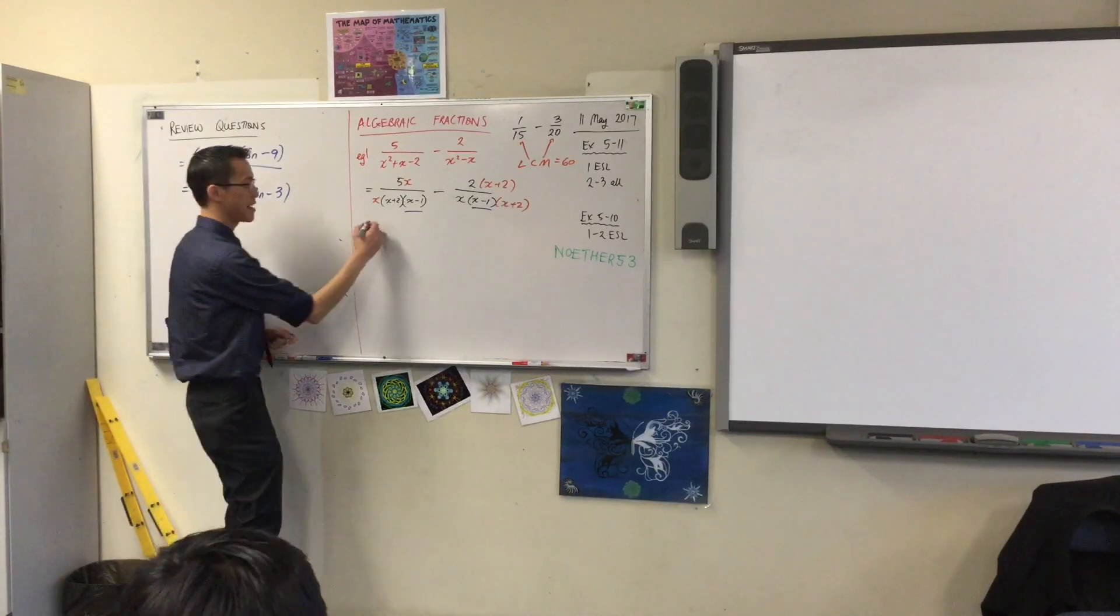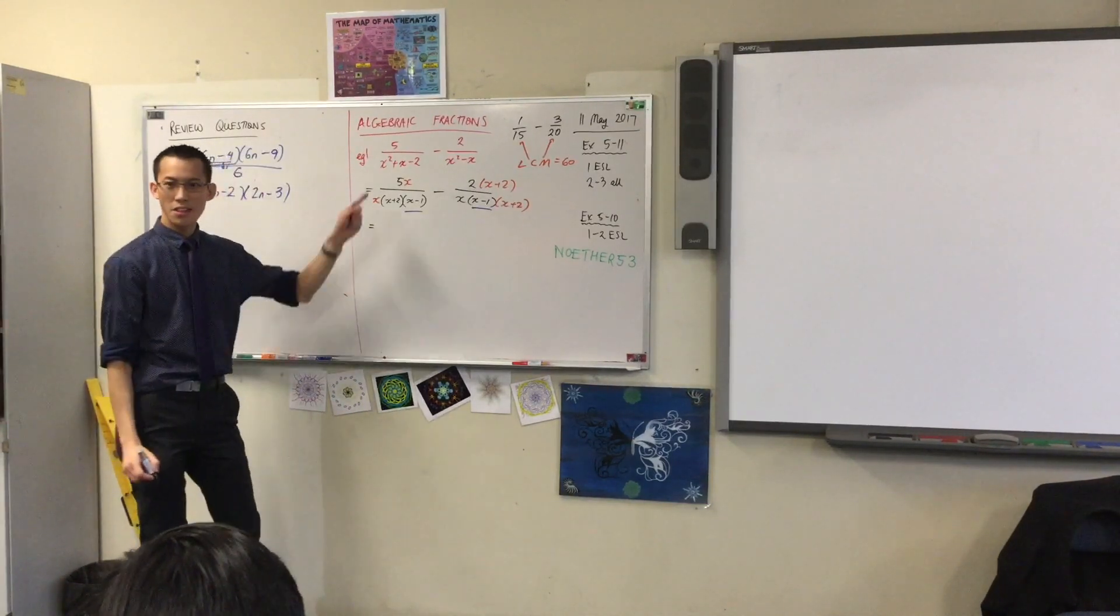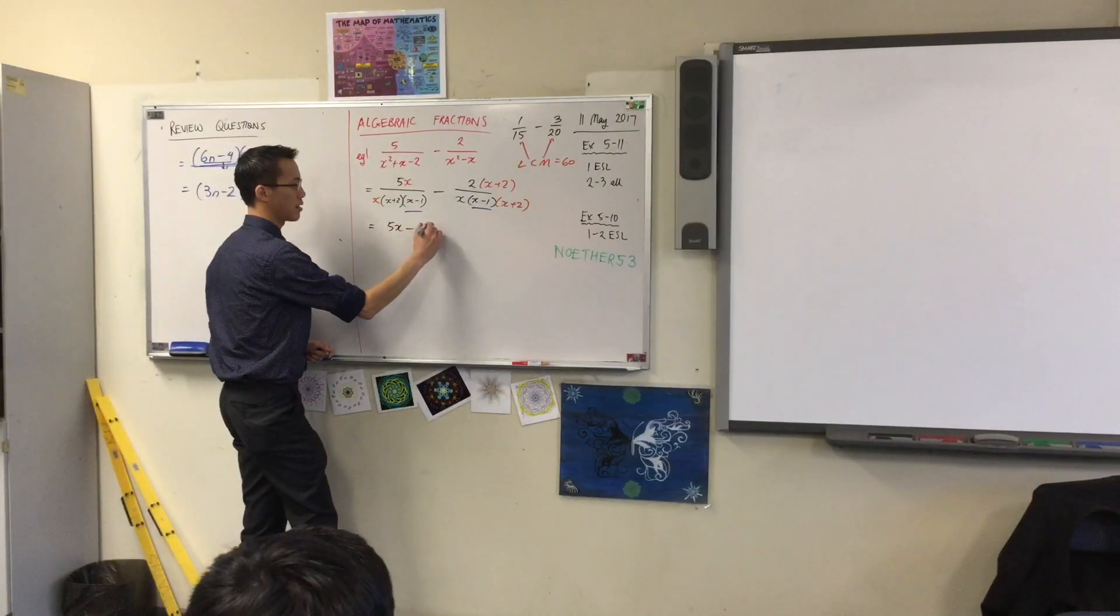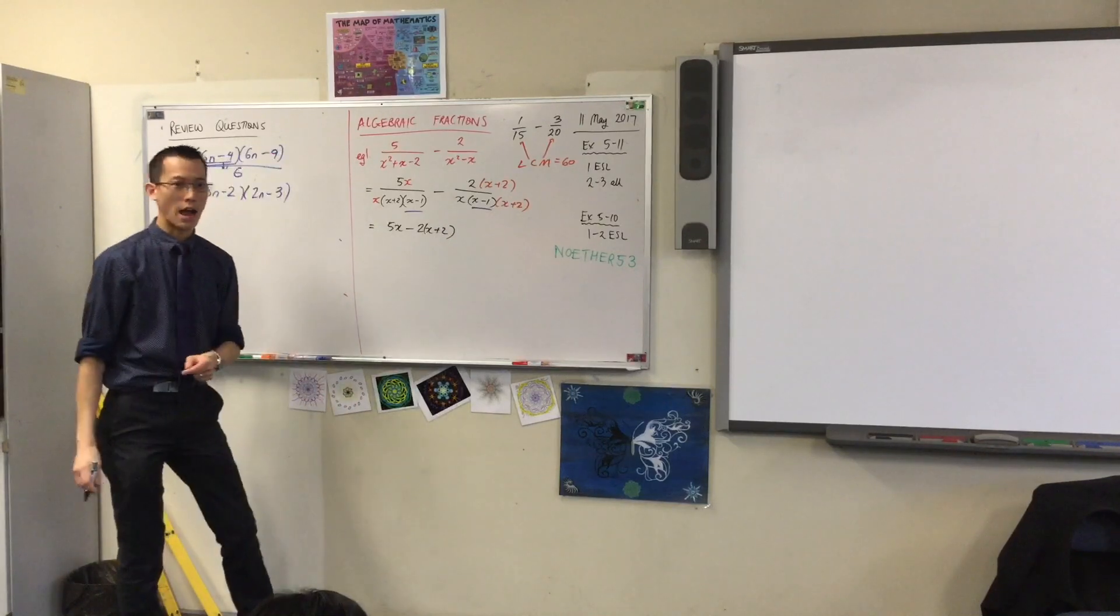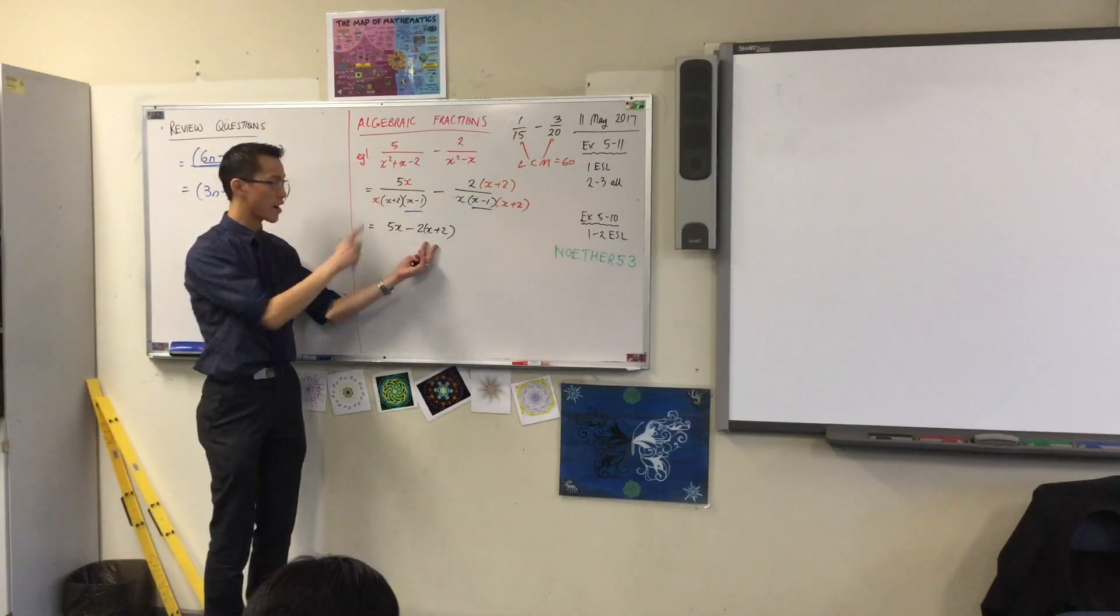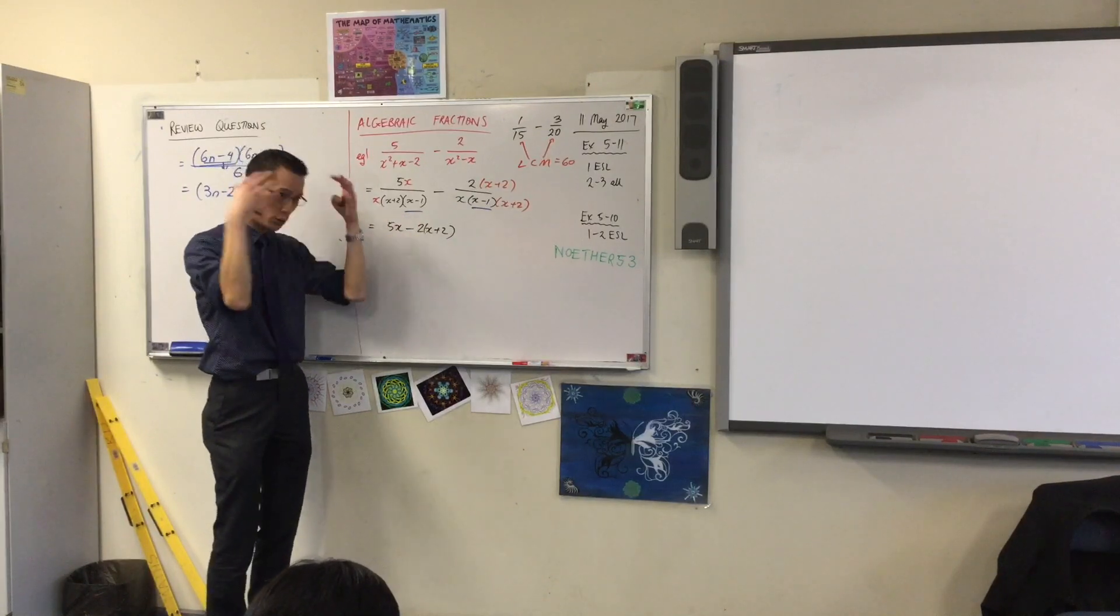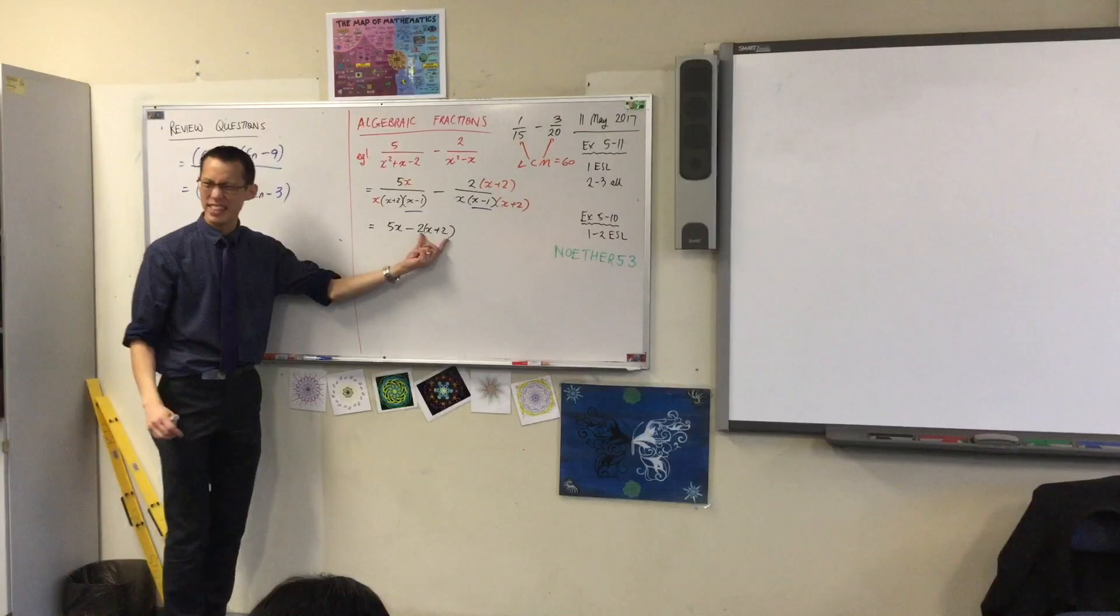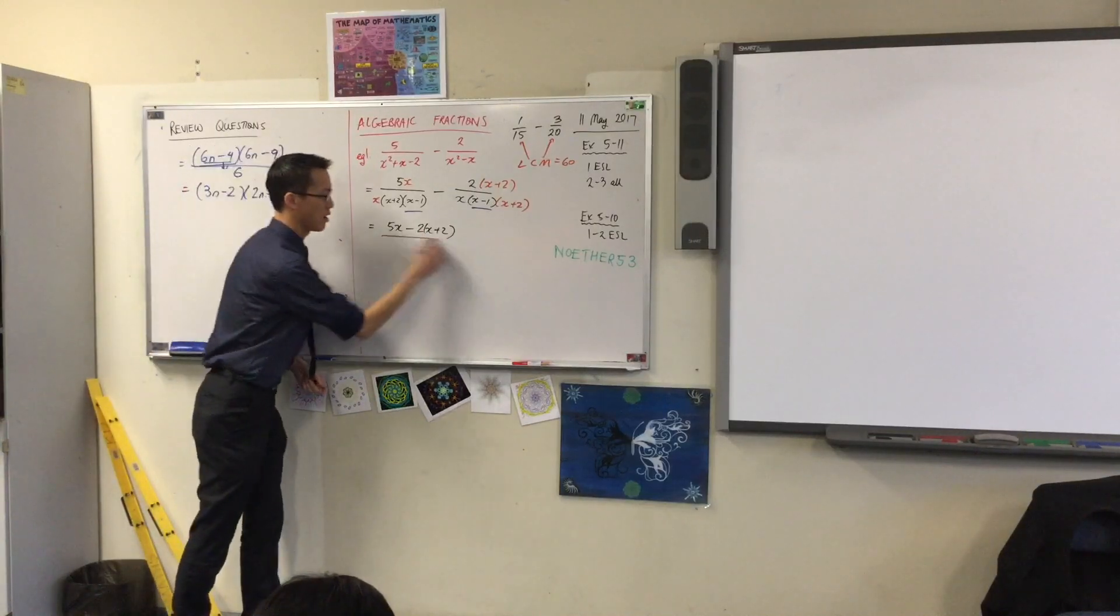The numerators, they just subtract. 5X take away... Whoops. That. I highly recommend, even though a lot of you will think, ooh, I can expand this, I highly recommend you wait for the next step because you do too many things together and your brain forgets to do some of them. Okay? So, I'll leave that factorized for now. What's my denominator?